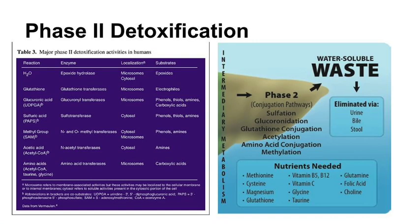Phase II detoxification can also be called enzymatic conjugation. After Phase I, the lipid-soluble toxin is converted to a more water-soluble form for easy elimination. Liver cells attach the toxin to other substances to increase its solubility as well as reduce its toxicity. There are six Phase II detoxification pathways.